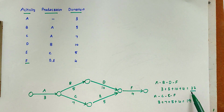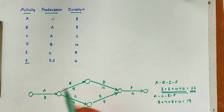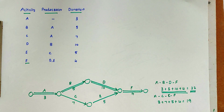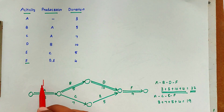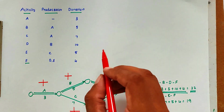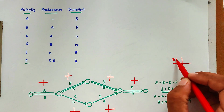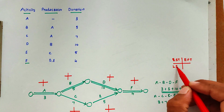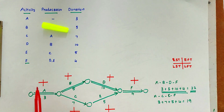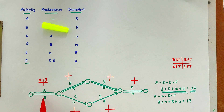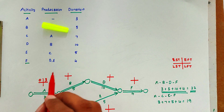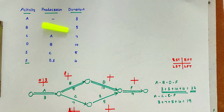The path containing the maximum duration is called the critical duration and critical path. Path A–B–D–F with duration 20 is therefore the critical path. Now we can find the EST, EFT, LST, and LFT. We place the EST on the left and EFT on the right of each node. Starting at 0, node A: 0 + 3 = 3.